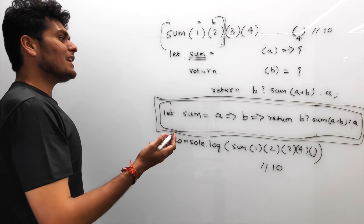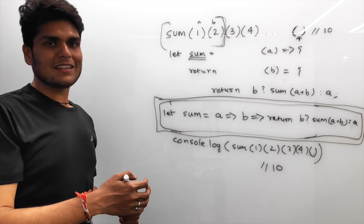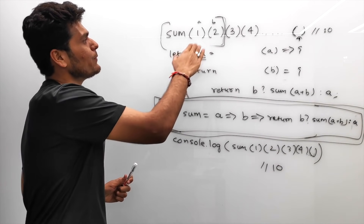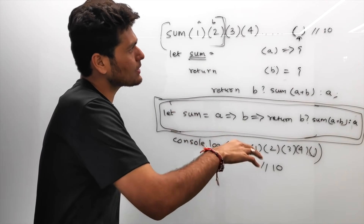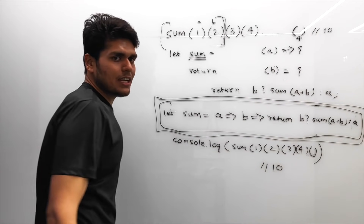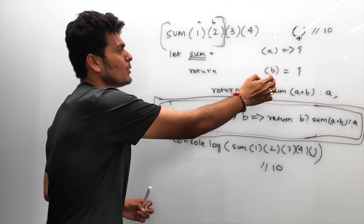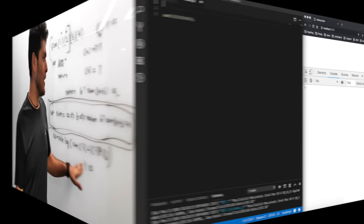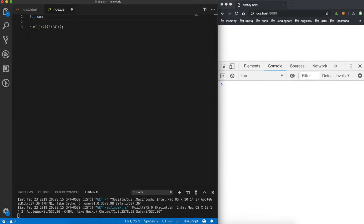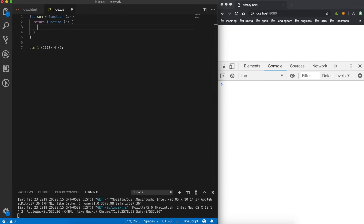This complex-looking problem is very easy to implement — you just need to know a little bit of recursion. Whenever you get such a problem, infer what the function is expecting: it just needs to return a function again and again until it reaches an empty call. Let's now write this single line of code in the browser to verify. We write: `const sum = a => b => b ? sum(a + b) : a`.